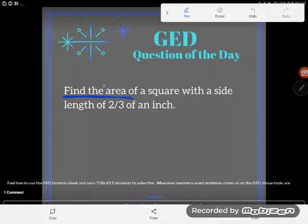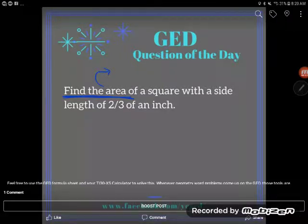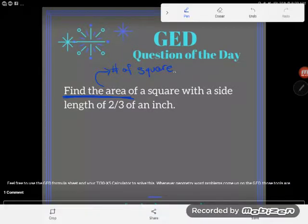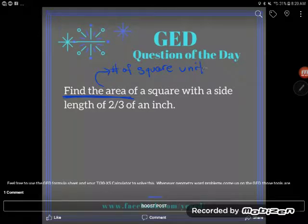So first of all, let's remember what area is. Area is basically the number of square units it takes to cover a shape. Some people call it the inside. I would encourage you not to call it the inside because then you'll mix it up with volume. It's the number of square units to cover a shape. Think of it as covering. We're covering a shape.